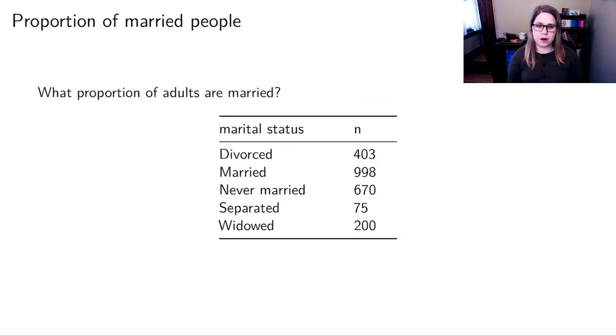We could try to figure out what proportion of people are married. So here in my frequency table, I've gotten rid of the NAs, because I think that that's not legitimate data. And I've got my table here with the other numbers. The first thing I'm going to need to do in order to figure out the proportion is I'm going to need to figure out the total. So I'm going to need to add up 403 plus 998 plus 670 plus 75 plus 200.